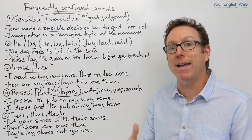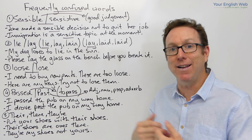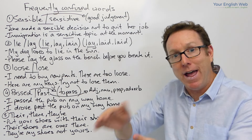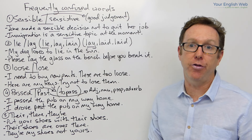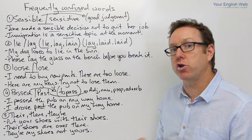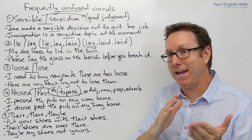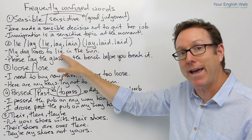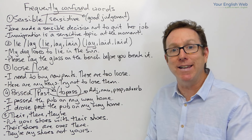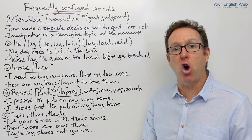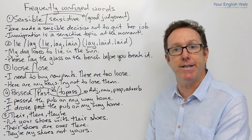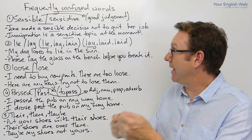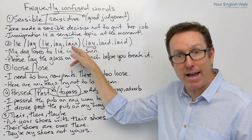You lie in bed. You lie in the sun. You go to the beach, you put down your towel, and you lie on the beach. Now, the confusion comes when we use it in the past tense. My dog loves to lie in the sun — and yesterday, my dog lay in the sun. Or my dog has lain in the sun all day.